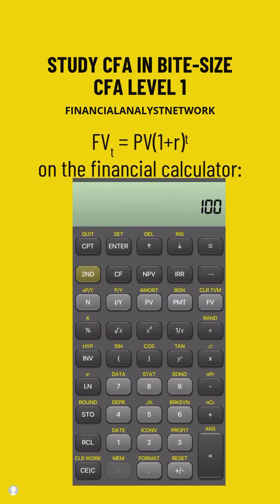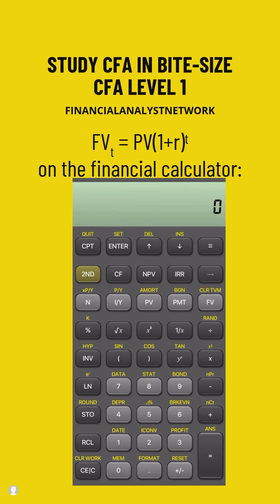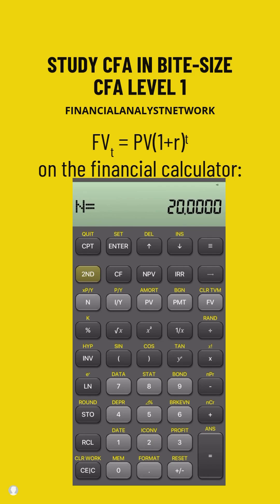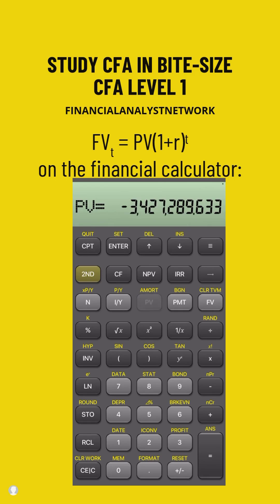On the calculator, enter 10 million and press the FV button. Then enter 0 and press PMT, because there are no payments in between the time period. Then enter 20 for N for the number of years, and 5.5 for I/Y for the interest yield. Then press CPT for compute and the PV button. This gives you $3.427 million.